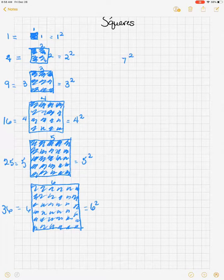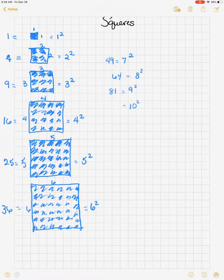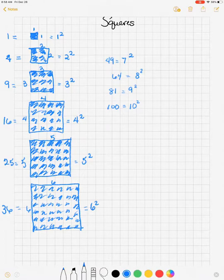And of course, 7 squared is 49. And we know that 8 times 8 is 64. 9 squared is 81. 10 squared is 100.